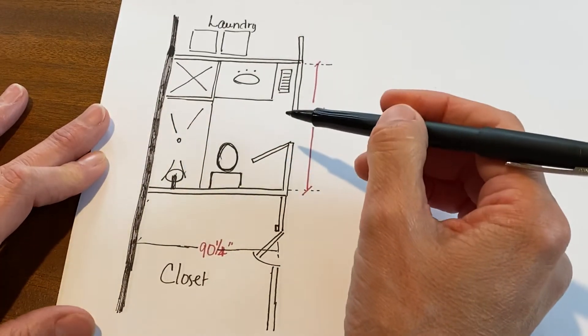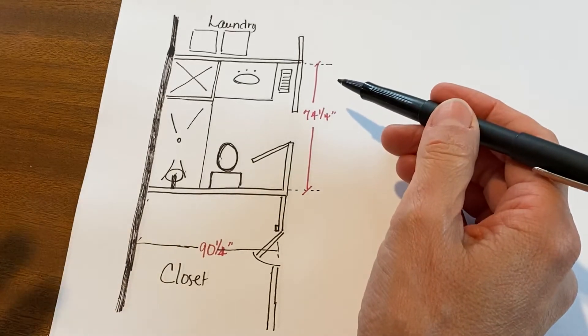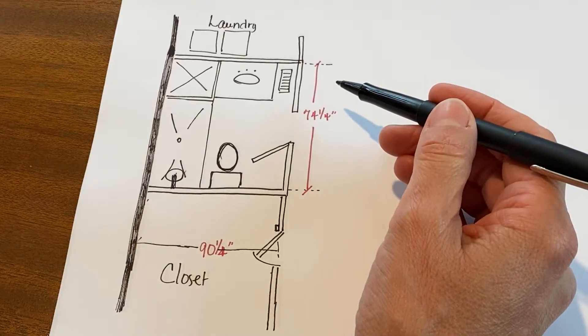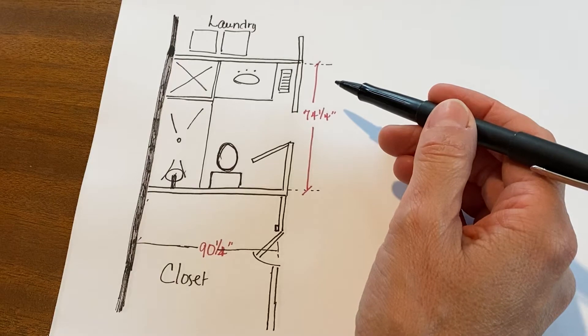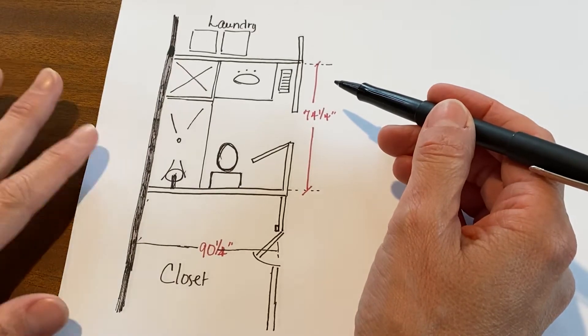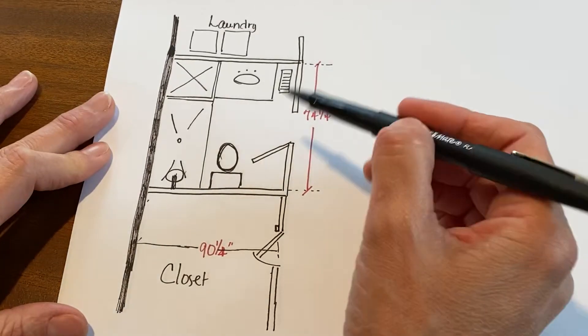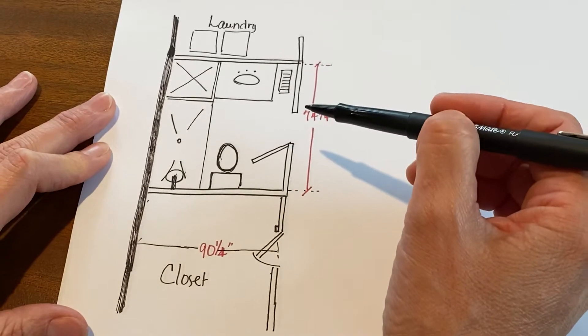So I go in and I draw this up and I measure it off, and I look at Emily and I say, 'Okay, what is your main goal?' And she said, 'Honestly, if I could just get more space I would be really happy.' This is their only bathroom in the house, by the way.